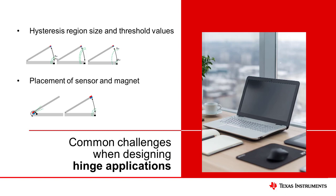If the system has insufficient hysteresis, it would cause false triggering of a door alarm or flickering of a laptop screen. Wider hysteresis will make your equipment less susceptible. However, too much without proper design could lead to cases in which the transition state is reached in an unideal position, or not reached at all.